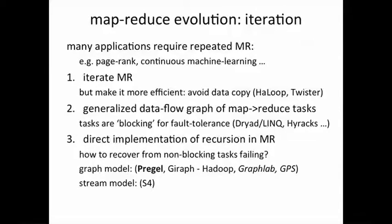Second is to generalize the model itself by using arbitrary combinations of map and reduce and pipelining of data between them. And the third is a direct implementation of recursion in a MapReduce-like environment. The graph model is one such model, and there are many examples which we'll talk about briefly. And then there's another model called the stream model which is being developed at Stanford.